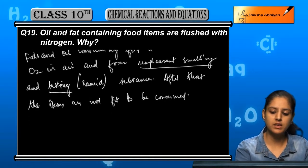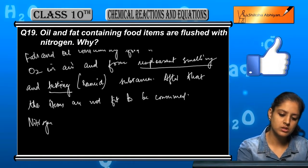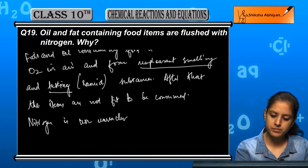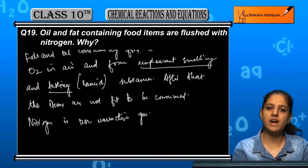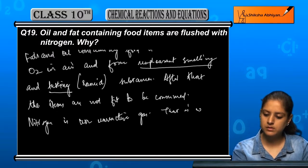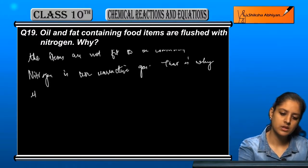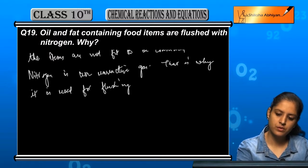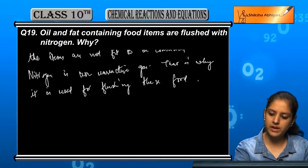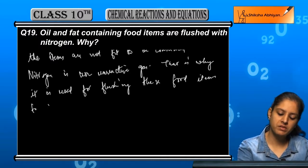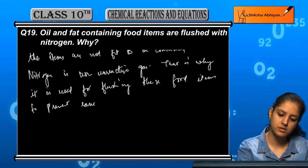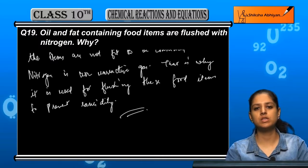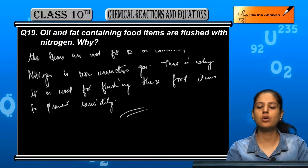So, what do we do with nitrogen? We pack food items with nitrogen. Nitrogen is an unreactive gas — it is less reactive. That's why we use it. It is used for flushing these food items to prevent rancidity. Rancidity can be prevented by nitrogen flushing in food items which contain fat and oil.